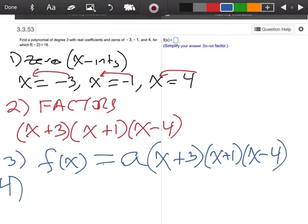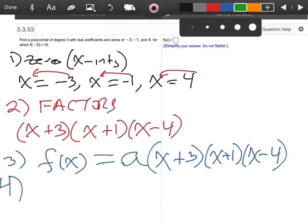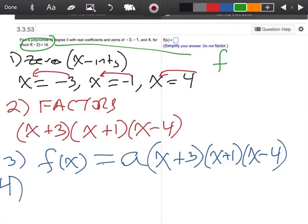Okay, this is the fourth step I'm going to do. What I'm going to do here is see right here where it tells me, and we write it over here, f of negative 2 is equal to 18. So remember, this is my x value, and this is my y, or my f of x value.